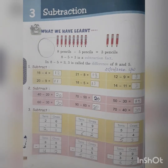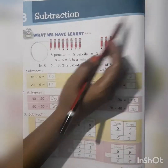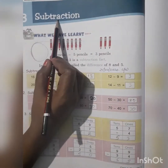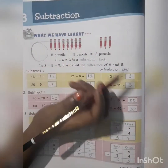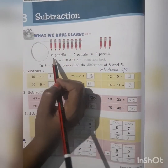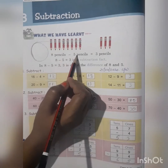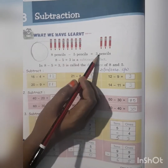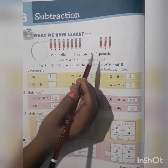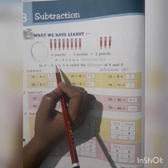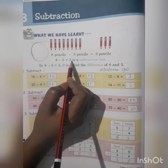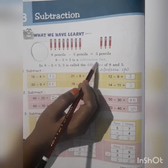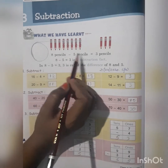Good morning class. Today we are going to revise chapter number 3, Subtraction, which we have learned. 8 pencil minus 5 pencil is equal to 3 pencil. It means 8 minus 5 is equal to 3. This is a subtraction fact.